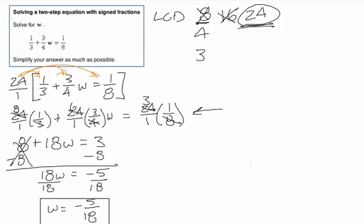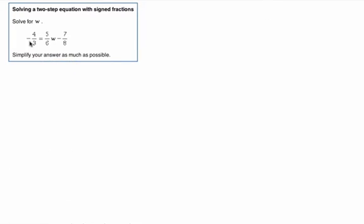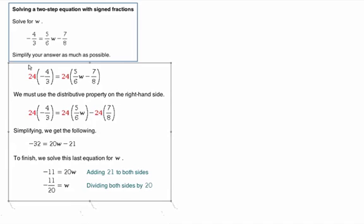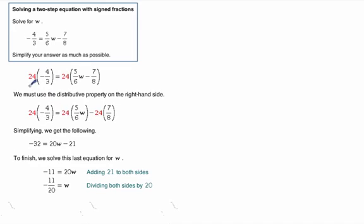So, there's a couple of examples. Here's one you can work through on your own. Pause this video. And then work out the problem. Get your answer. And come back and check your answer. Okay. So now that you've worked that out, you should have gotten an LCD of 24. Multiplying each and every part by 24, we get rid of fractions. So we end up with negative 32 equals 20w minus 21. Working through that, you should have gotten w equals negative 11 over 20.